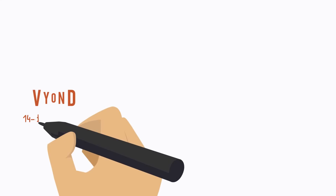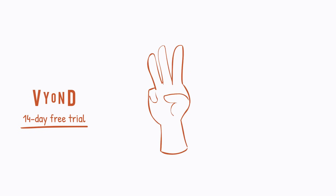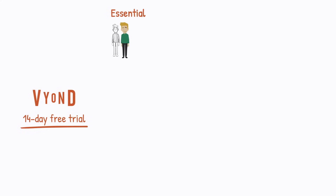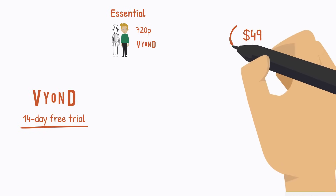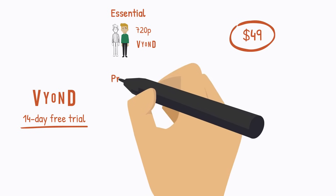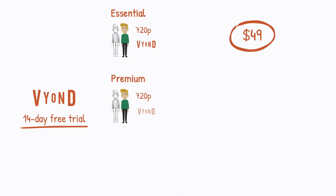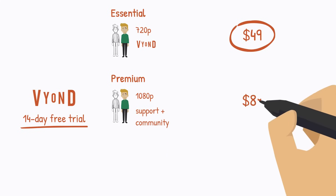The quick rundown of pricing: Vyond offers a 14-day free trial, then you upgrade to one of three primary plans. The Essential plan lets you animate in whiteboard and business-friendly style, exporting in 720 with a watermark, at $49 a month. The Premium plan removes the watermark, lets you export in 1080, and gives access to live chat support and the Vyond community — this costs $89 a month.